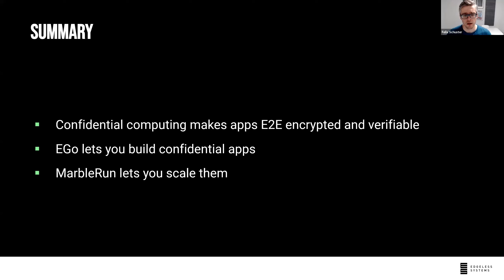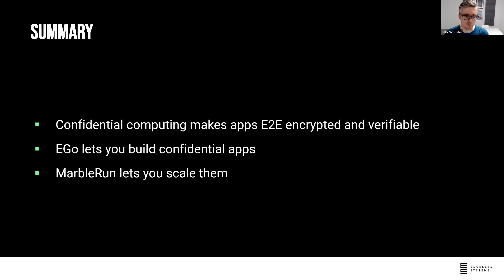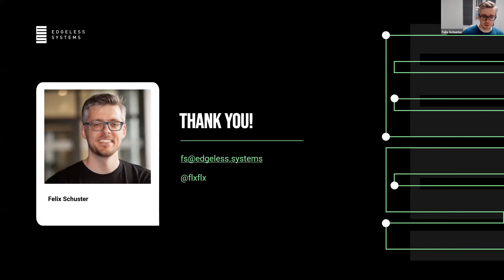To summarize: confidential computing makes apps encrypted and verifiable. EGo makes it easy to build confidential apps in Go. Marble Run lets you scale them easily on Kubernetes. There are cloud-native demo apps out there — like the OSM bookstore demo or the Linkerd emoji voter demo — that can be made end-to-end confidential using EGo and Marble Run without changing a line of code, just some configuration. Feel free to reach out if you have any questions or feedback.